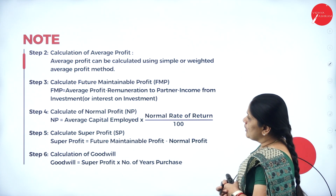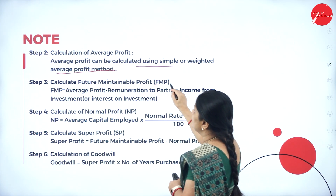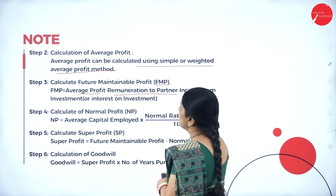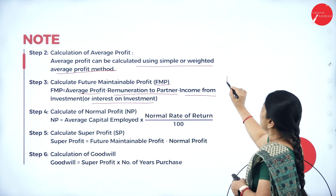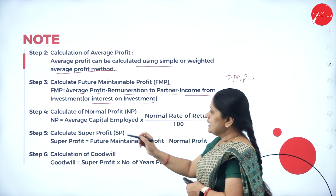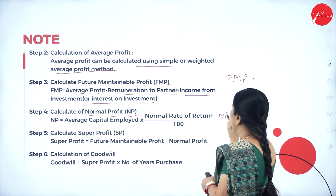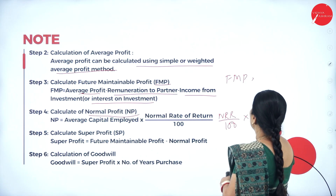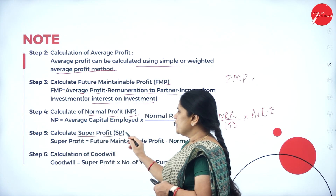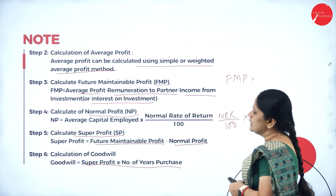The next step is calculation of average profit, which can be done using simple or weighted average profit method. Then calculate the Future Maintainable Profit (FMP): average profit minus remuneration to partner or income from investment. Then calculate normal profit: average capital employed × NRR (normal rate of return) / 100. Finally, super profit = FMP minus normal profit, and goodwill = super profit × number of years purchase.